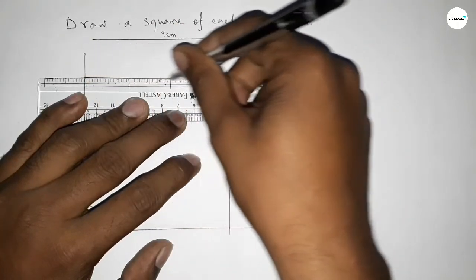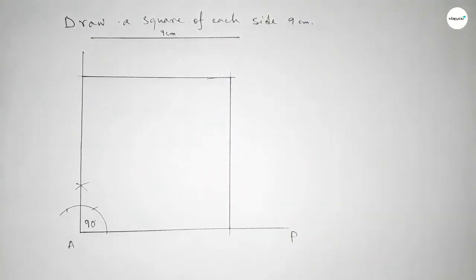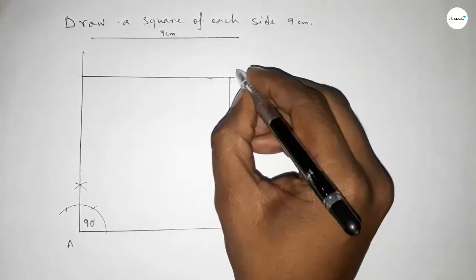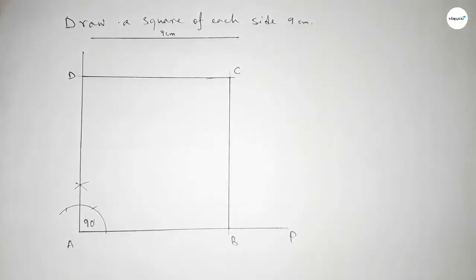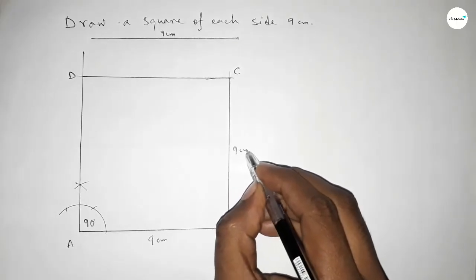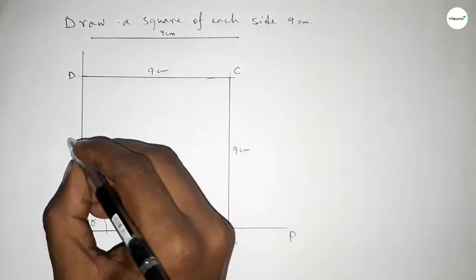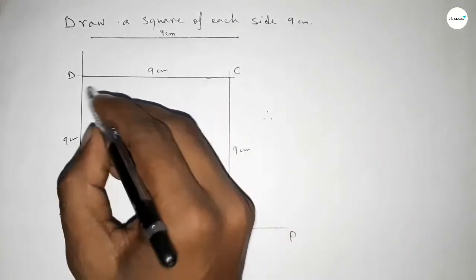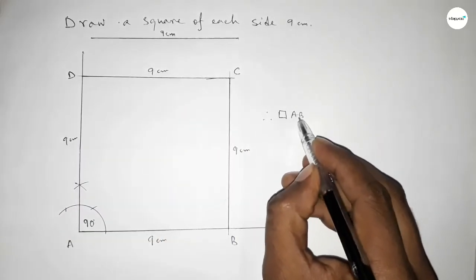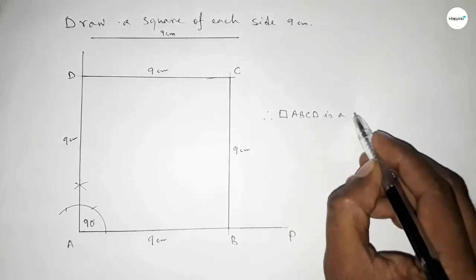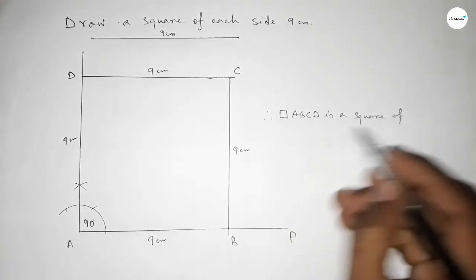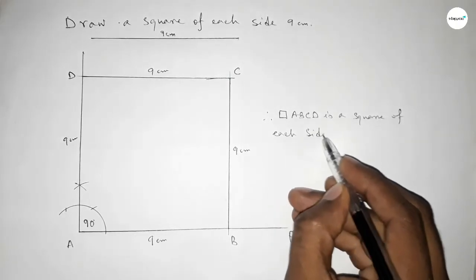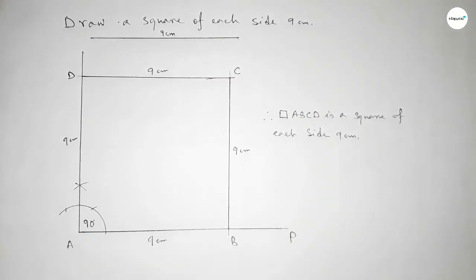Joining this side, then joining this side to complete the square. Taking B, C, and D as the remaining points — this side is 9 cm, this side 9 cm, and this side 9 cm. Therefore, rectangle ABCD — that is, square ABCD — is a square of each side length 9 centimeters. That's all, thanks for watching, please share it with your friends.